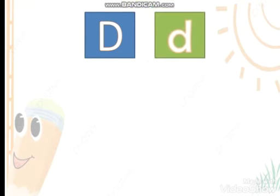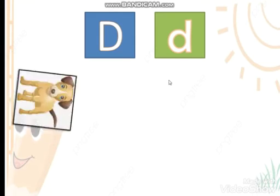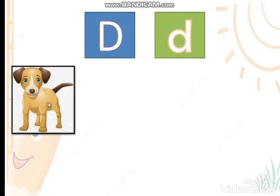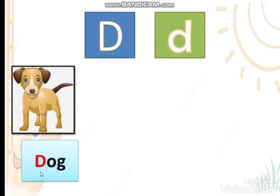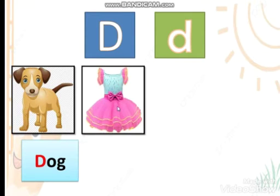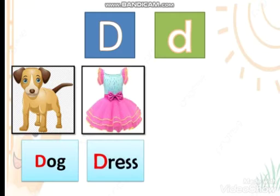Look — this is a capital D, and this is a small d. What's the sound? Look — what's this? It's a dog! Dog, and it starts with letter D. Wow, it's a dress! Dress, and it starts with letter D.